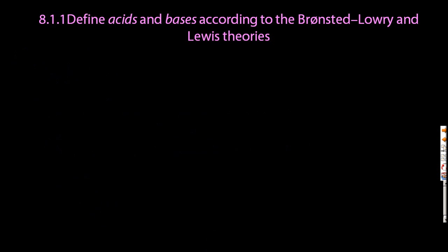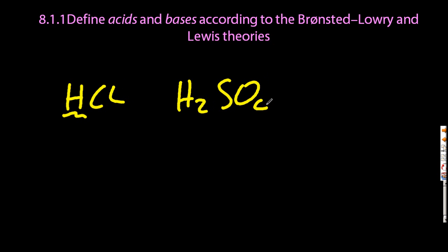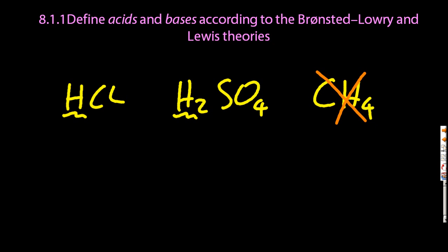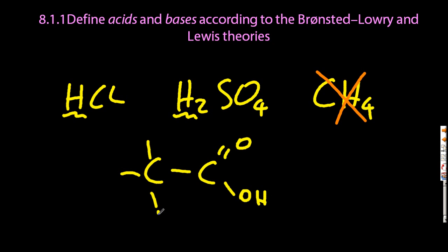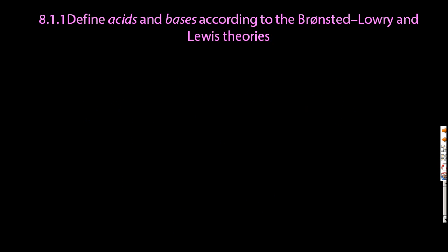Let's look at some examples. Hydrochloric acid — that hydrogen can be donated, as can the hydrogen in sulfuric acid. But in methane, those hydrogens won't come off; the bonds are too strong. And in ethanoic acid, only one of the hydrogens is acidic. The other three, marked with crosses, can't be donated. So it's not as straightforward as it could be.